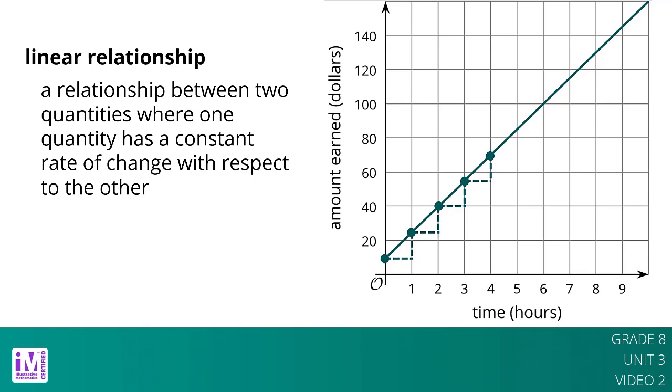We can find out the rate of change using the graph. Because the rate of change is constant, we can take any two points on the graph and divide the amount of vertical change by the amount of horizontal change.